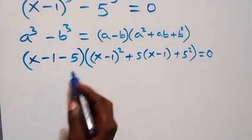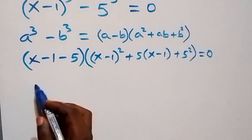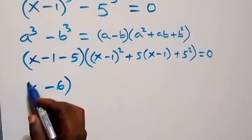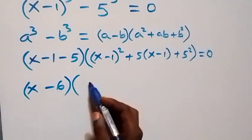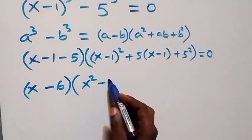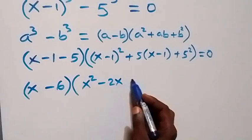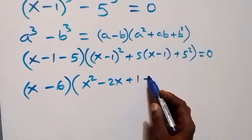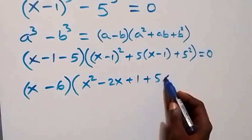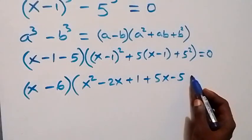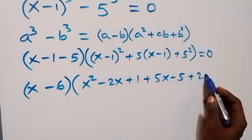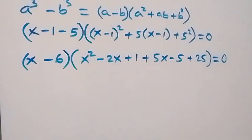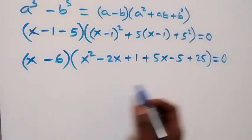Simplifying: minus 1 minus 5 gives minus 6, so we have x minus 6. Into bracket, expanding: x squared minus 2x plus 1, then plus 5 open bracket gives plus 5x minus 5, then plus 5 squared that's 25, equals to 0.